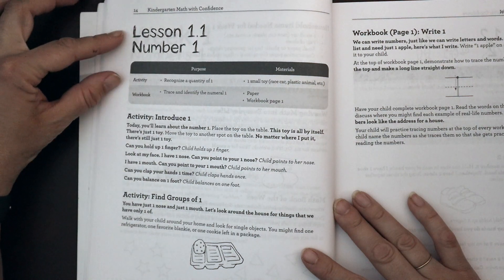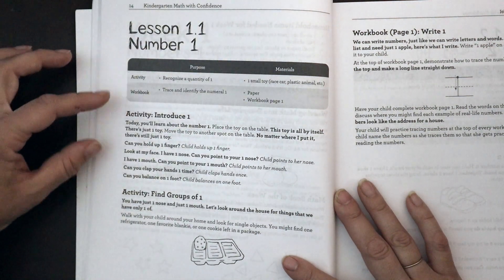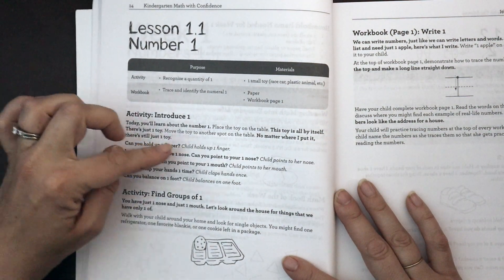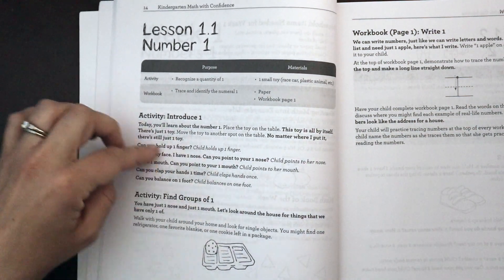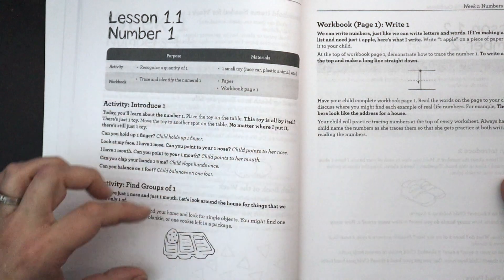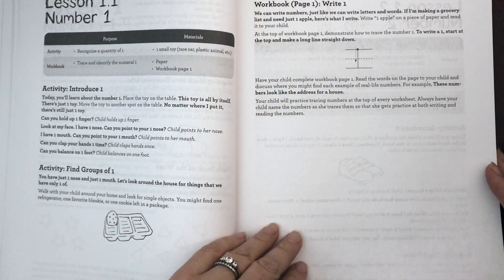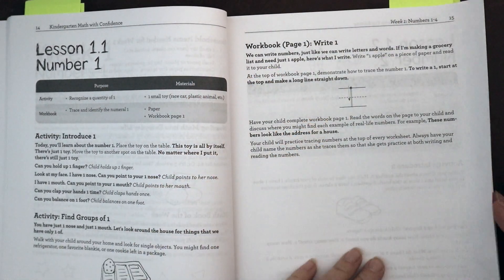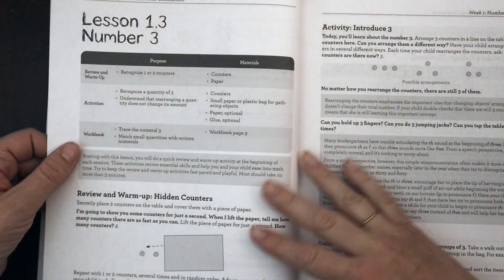Then we move into the lessons. We have our activity and the workbook pages, the purpose and the materials. We have the introduction. It's scripted with an answer. We have an activity. These are all very hands-on activities using things mostly found around your house. And then we have a description of the workbook page. The workbook pages are very simple and straightforward. And then each lesson follows the same progression.